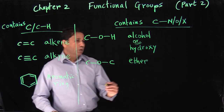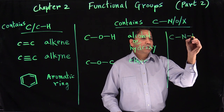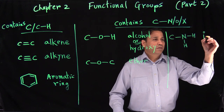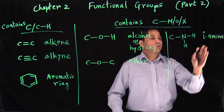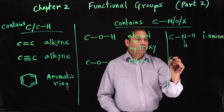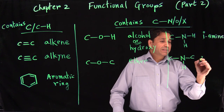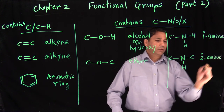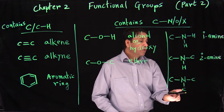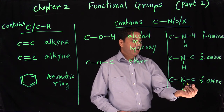Carbon can also be bonded with nitrogen, and nitrogen should have three bonds. If you have carbon bonded with NH2, that is your primary amine. You can replace one hydrogen with a carbon to get a secondary amine, and replace all the hydrogens with carbons to get a tertiary amine.